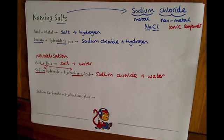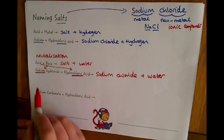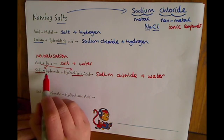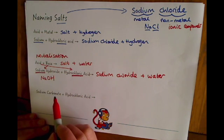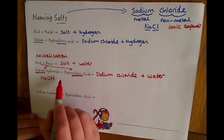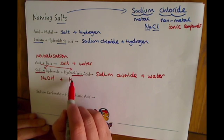Now if we had the symbol equation for this, it would be a lot easier for us to see what we're going to make. We'd have sodium hydroxide, which is NaOH, and we would also have hydrochloric acid, which is HCl.